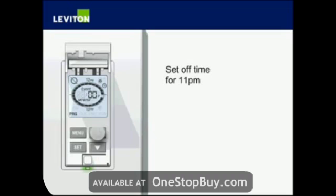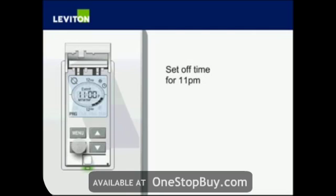To enter the off time, use the arrow up or down buttons to select the clock. Press Set and then again use the arrow buttons to choose hours — set for 11 in this case. Press Set again to confirm and advance to minutes. Accept the default 00 minutes for 11 o'clock and hit Set to confirm.